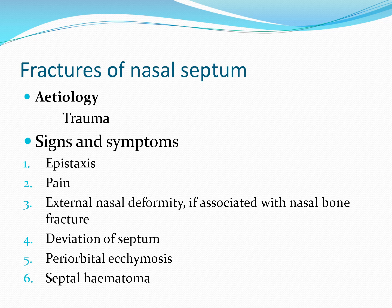Trauma usually causes fracture of the nasal septum. Nasal septum fracture can be associated with fracture of nasal bones, so there can be external deformity. Nasal septum fracture will lead to epistaxis because of a tear in the mucosa. The patient might have pain, dislocation of septum, deflected nasal septum, and associated external injuries can lead to periorbital ecchymosis.